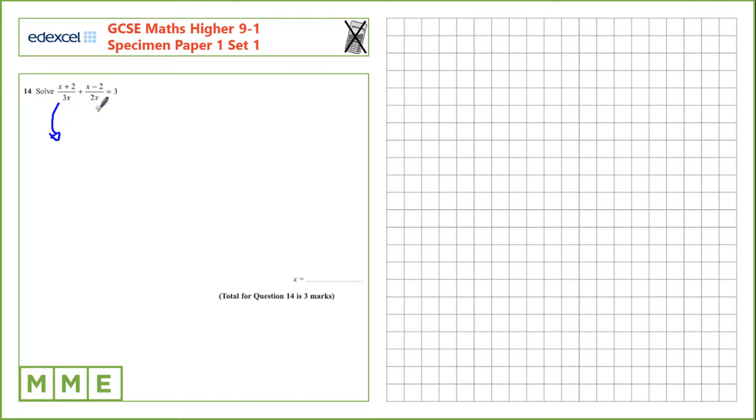I notice here, if I multiply the left one by 2, the denominator will be 6x, and the right one, if I multiply that by 3, the denominator will also be 6x. So, let's do that for each of these.